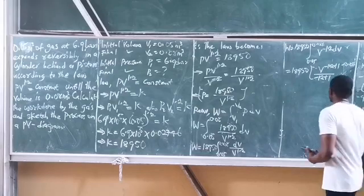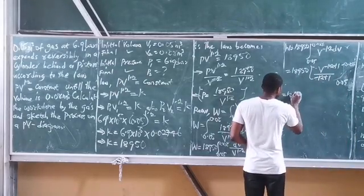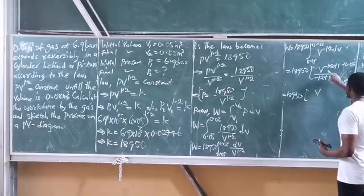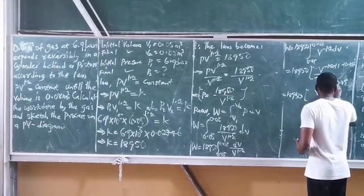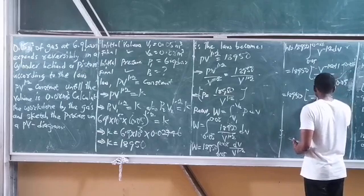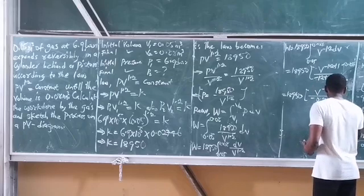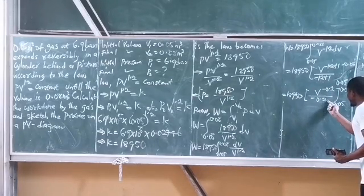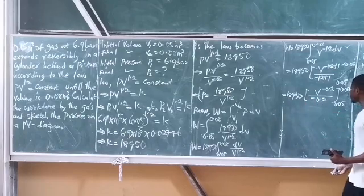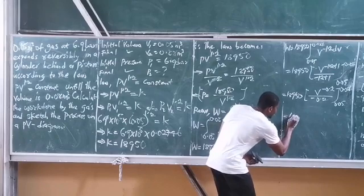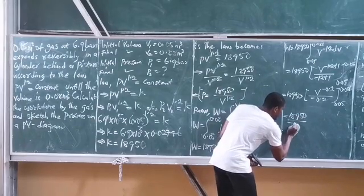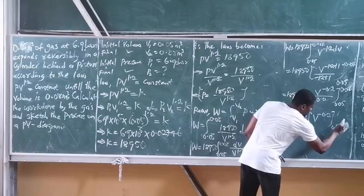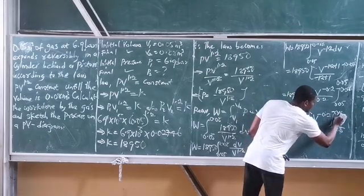Simplifying, this becomes 18,950 / (−0.2) × [V^(−0.2)] evaluated from 0.05 to 0.08. That gives −94,750 × [V^(−0.2)] from 0.05 to 0.08. Evaluating: 0.08^(−0.2) = 1.6702 and 0.05^(−0.2) = 1.8206.